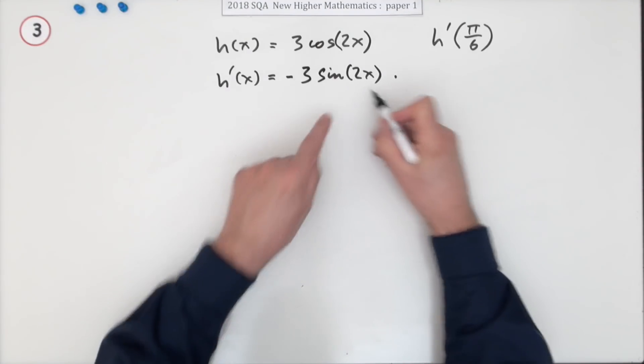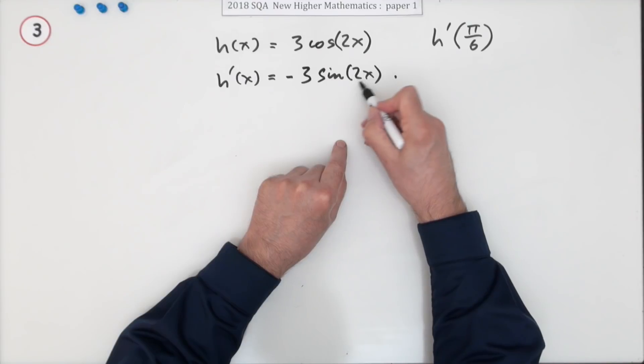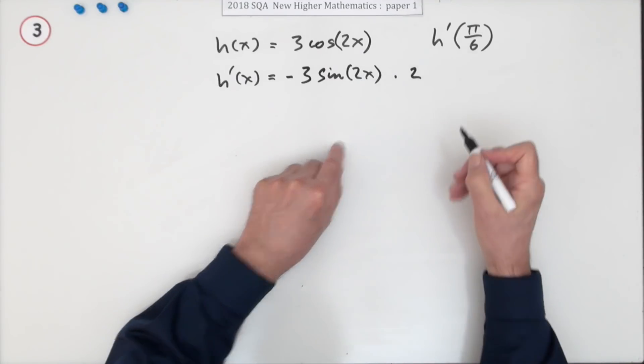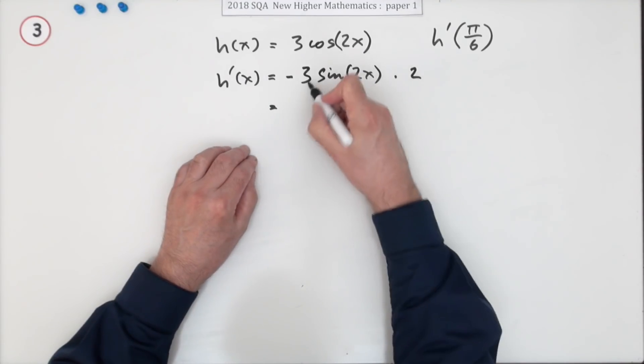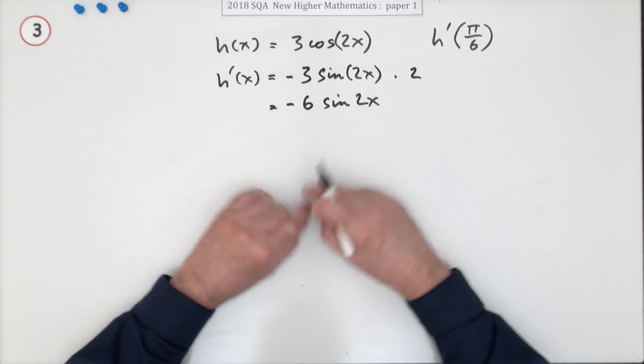That's what forms the chain. The inner derivative, the derivative of 2x, is 2, which means taking that to the front makes negative 6 sine 2x. You're getting two marks for that, one for getting negative 3 sine.